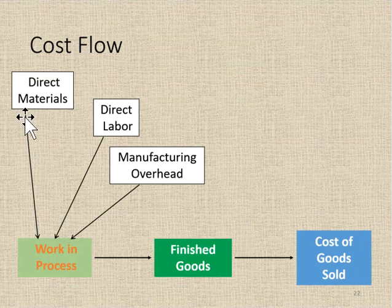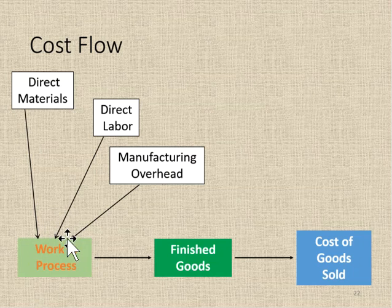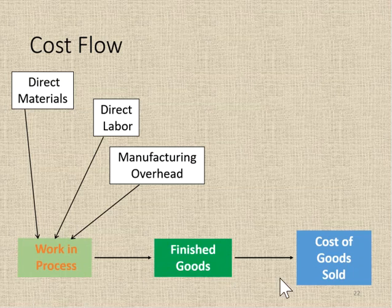Let's look at the cost flow. Direct costs are determined by the job cost record. Direct materials, direct labor, and manufacturing overhead all flow into work in process. As those goods are finished, they move to finished goods inventory, and as finished goods are sold, they move to cost of goods sold, which is an expense. Gross profit is then determined by subtracting cost of goods sold from sales revenue.